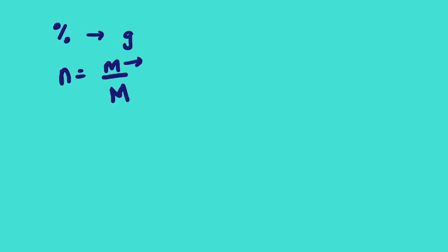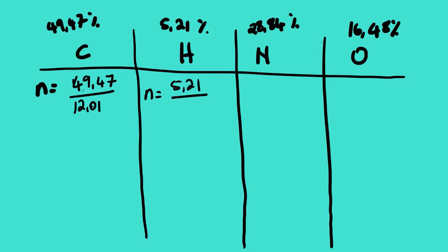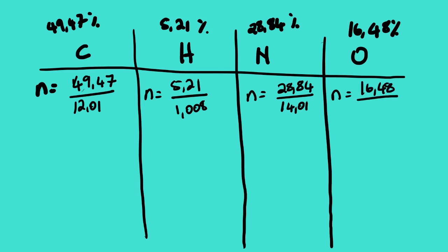We are going to use the equation: number of moles (in mol) equals mass (in grams) divided by molar mass (in grams per mole). The molar mass should be taken from the official periodic table of UNISA. So we set up: 49.47 g divided by 12.01 for carbon, 5.21 divided by 1.008 for hydrogen, 28.84 divided by 14.01 for nitrogen, and 16.48 divided by 16.00 for oxygen.